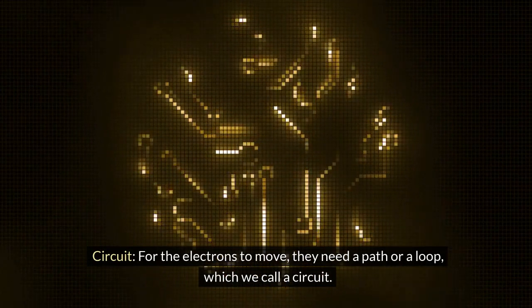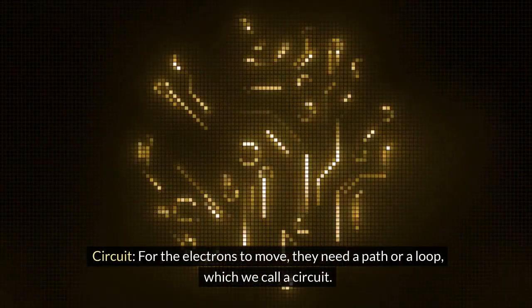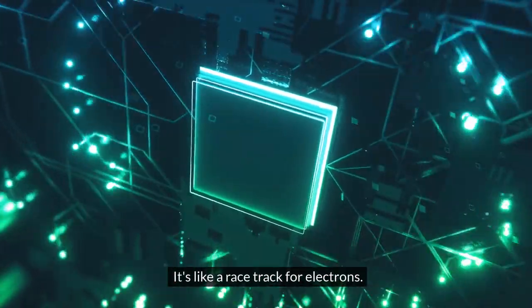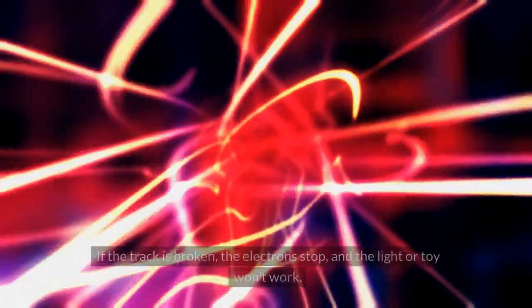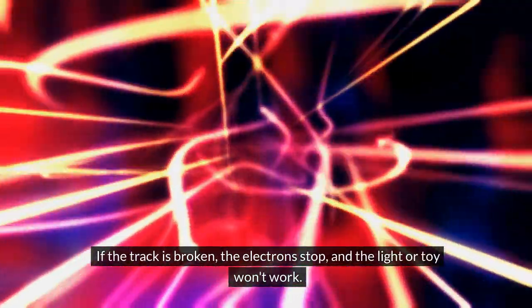Circuit, for the electrons to move, they need a path or a loop, which we call a circuit. It's like a race track for electrons. If the track is broken, the electrons stop, and the light or toy won't work.